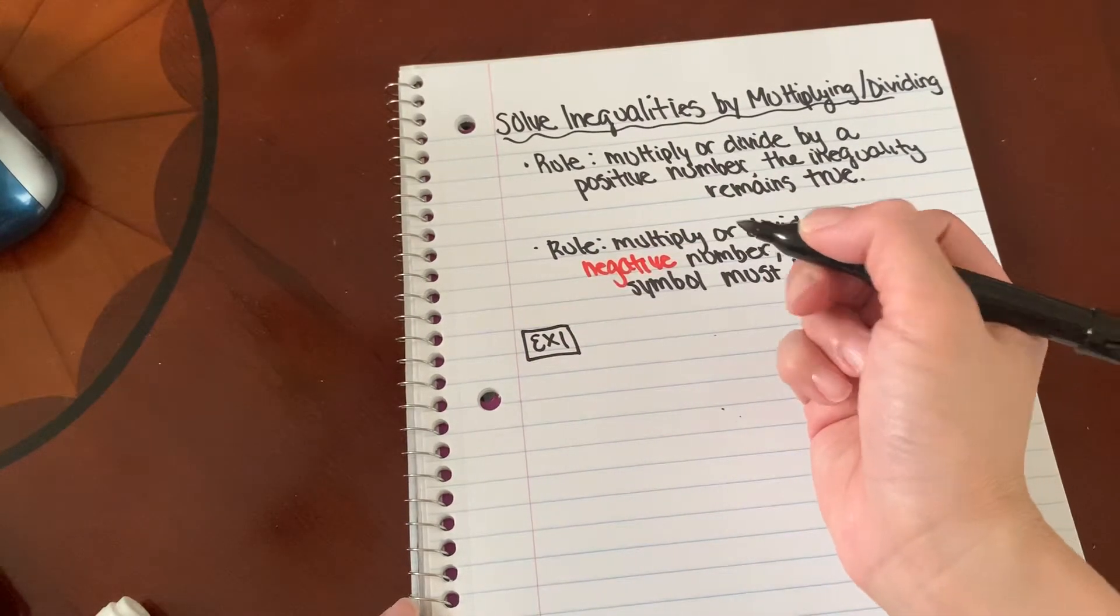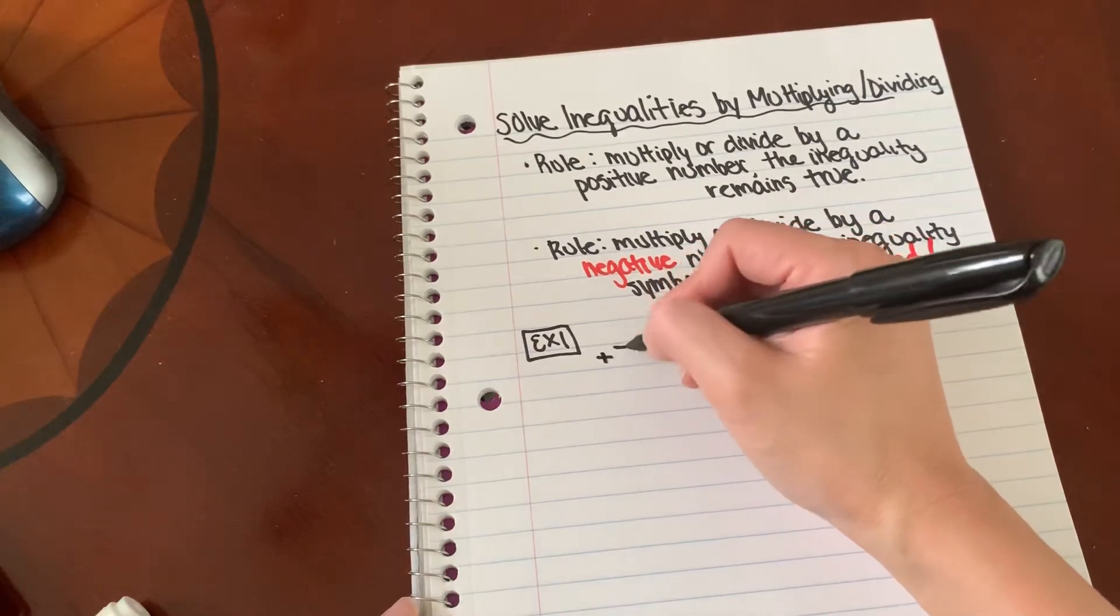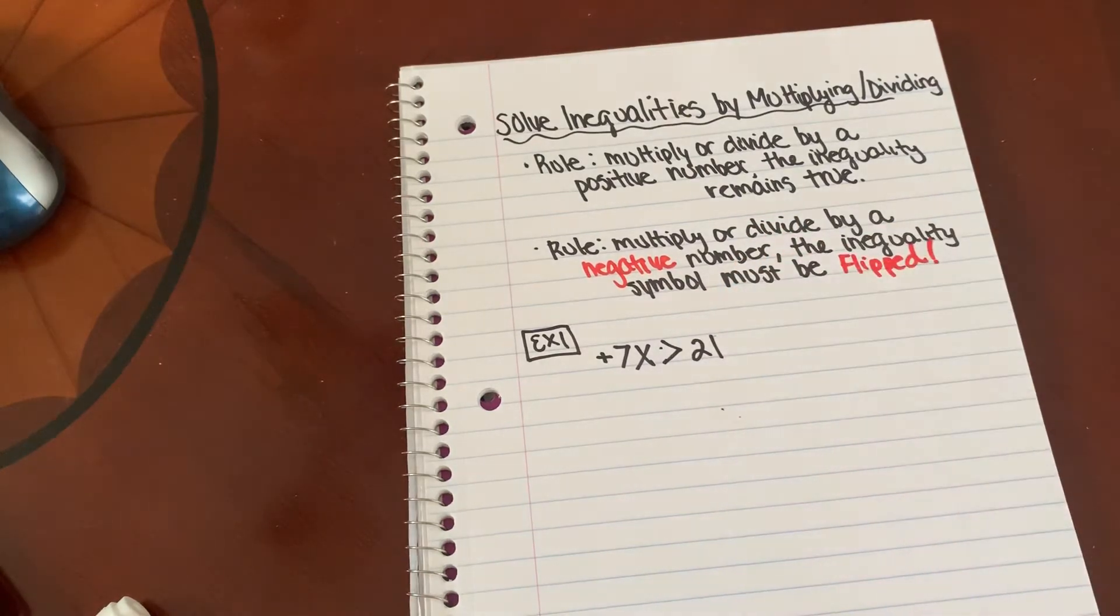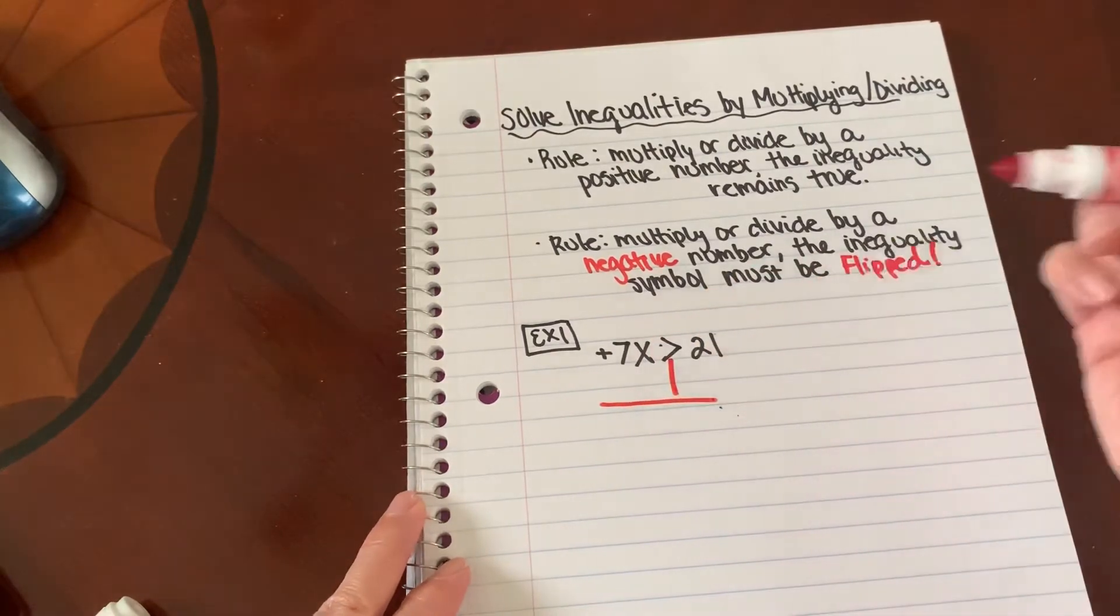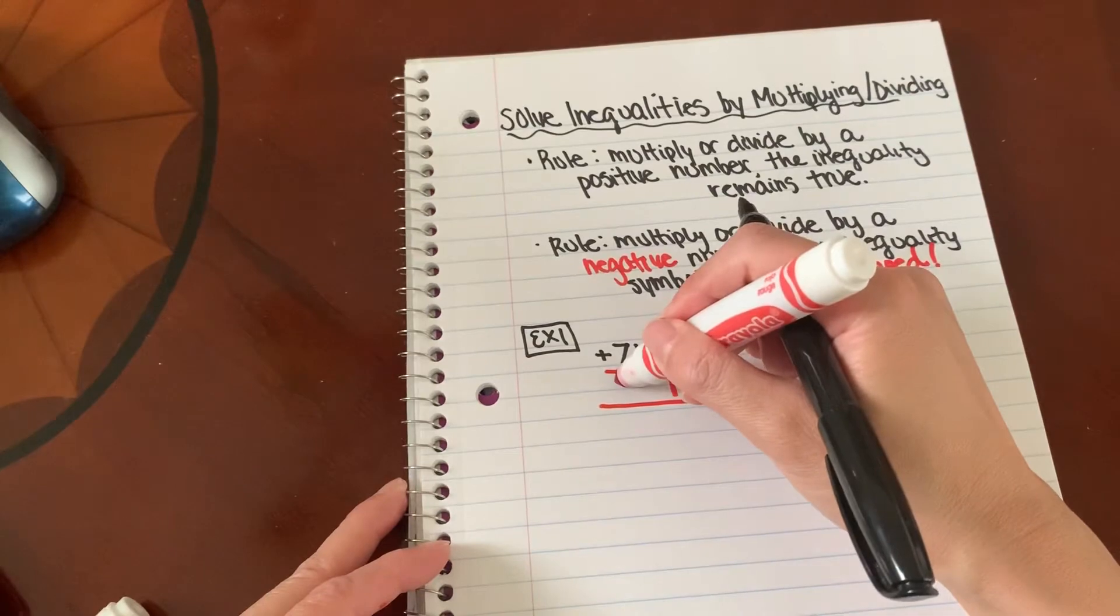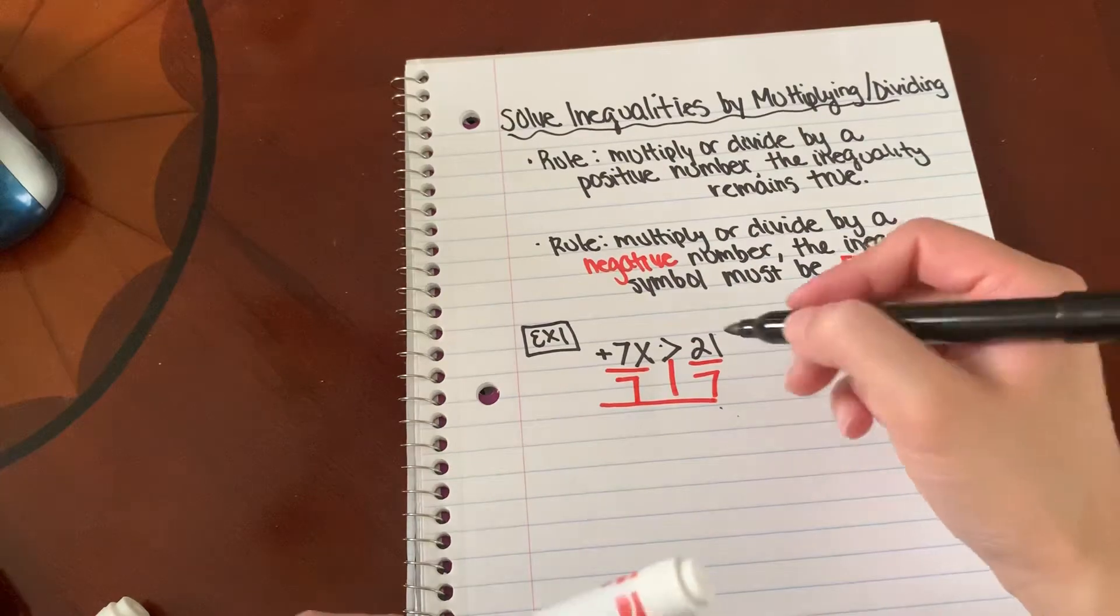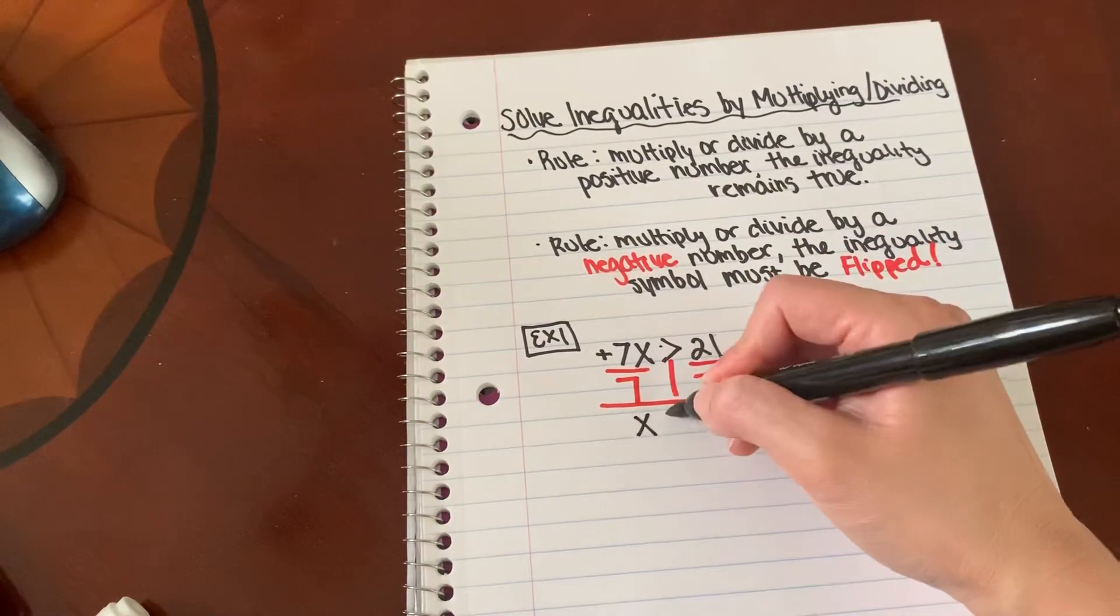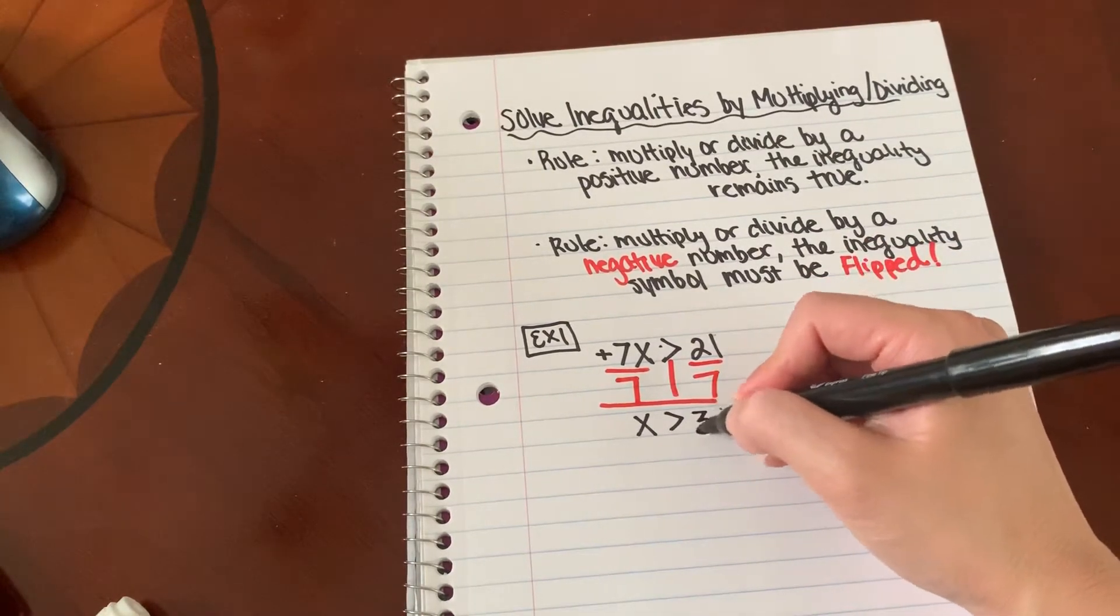So if we have positive 7x is greater than 21, we can still use our t-charting methods. What is the inverse of 7 times x? That would be divided by 7. Since we are dividing by a positive number, our inequality symbol is going to remain the same. 21 divided by 7 is 3.